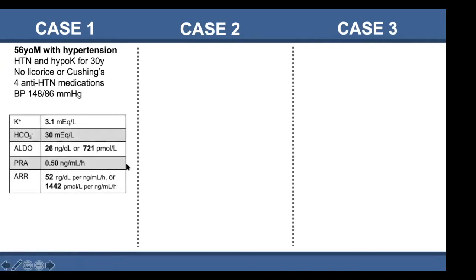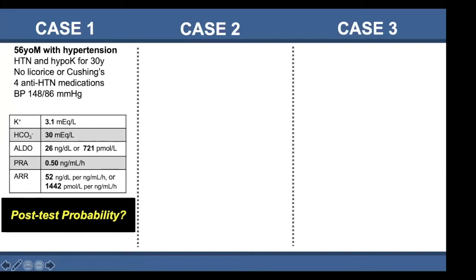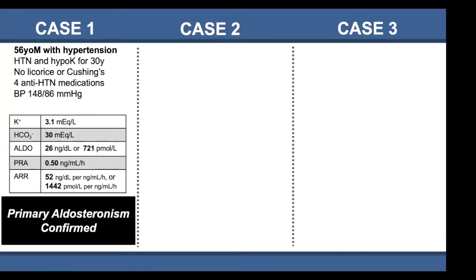Here are his laboratories. He is hypokalemic and alkalotic. His aldosterone level is quite high — 26 nanograms per deciliter or over 700 picomoles per liter — while his renin activity is very low, suppressed, such that his aldosterone-to-renin ratio is very high. What is your post-test probability? I would hope you all say 100 percent, because this is a confirmed case of primary aldosteronism. There's nothing else this could be, and no further testing is required.